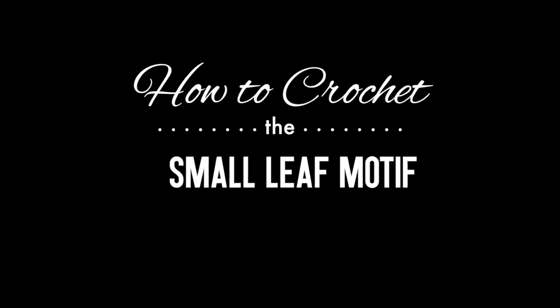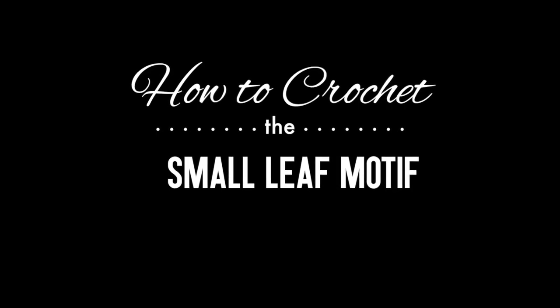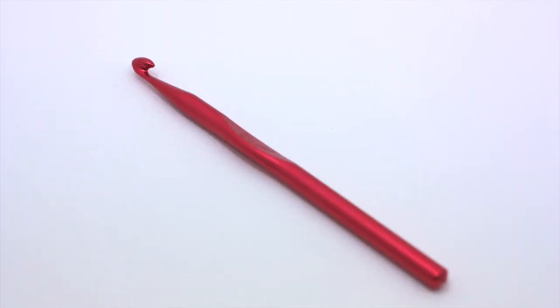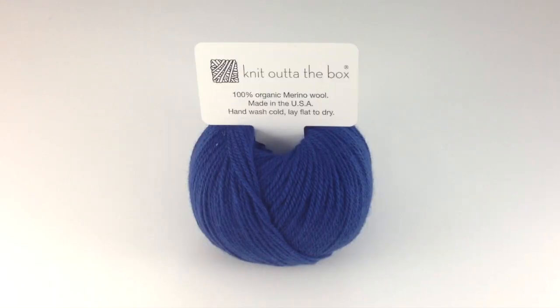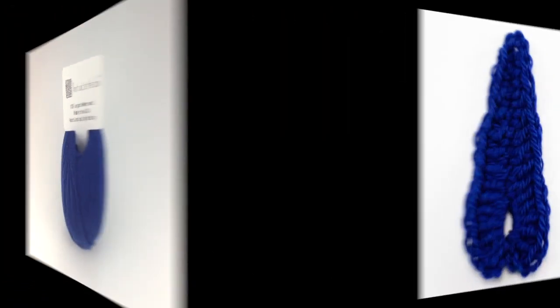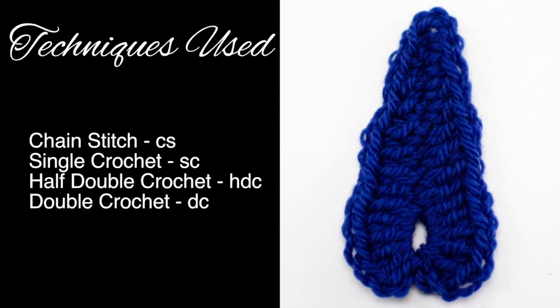How to crochet the small leaf motif. For this stitch you'll need a crochet hook and a ball of yarn. Special thanks to our sponsor, Knit Out of the Box, for providing today's yarn. Today we are using their 100% organic merino wool line in the color navy. For this stitch you'll need to know the following techniques: chain stitch, single crochet, half double crochet, and double crochet.